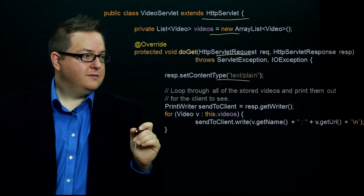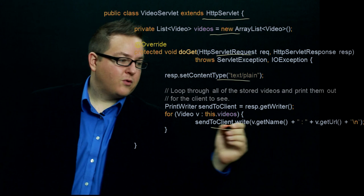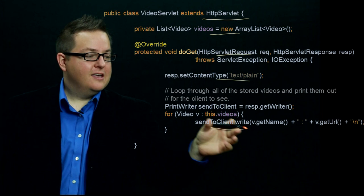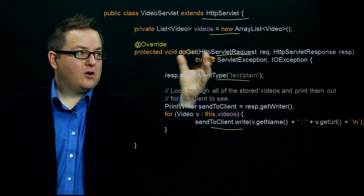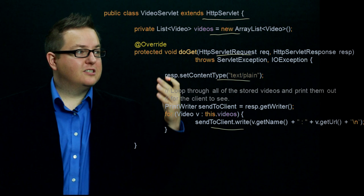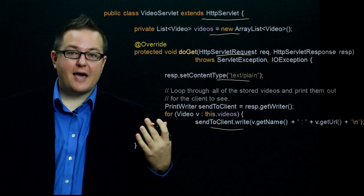A little further down in the servlet, we loop through the list of videos and for each video we simply write out a string being sent back to the client — in this case the name and URL of each video — separated by new lines. So you essentially get a plain text list of the videos currently stored on the server. It's relatively straightforward to implement this basic logic for storing a list, looping through it, and displaying results to the client in plain text.